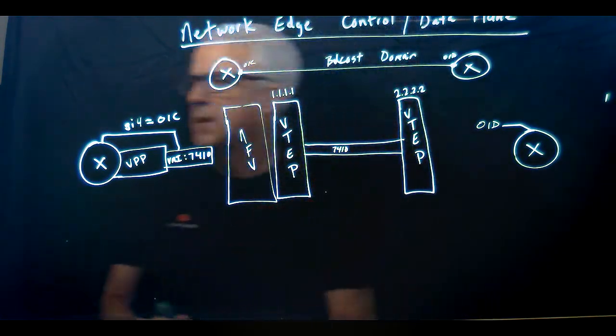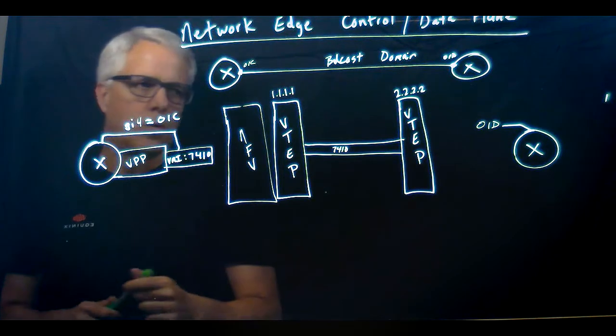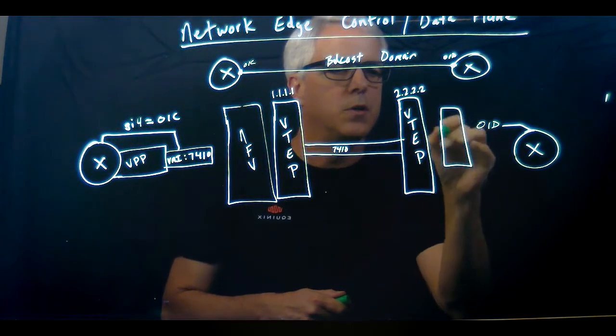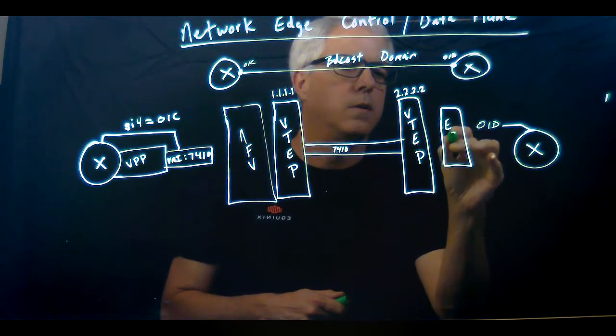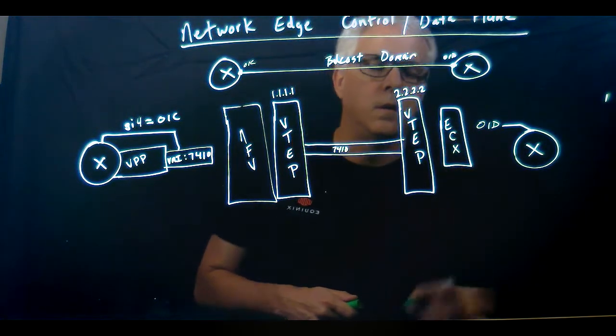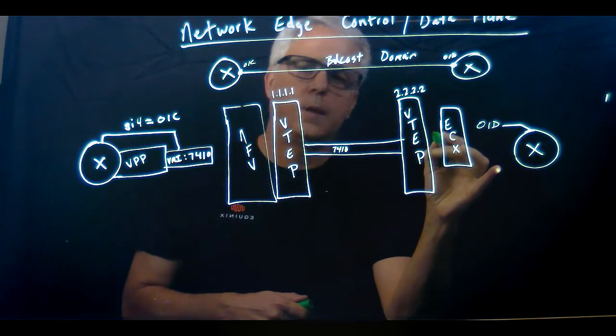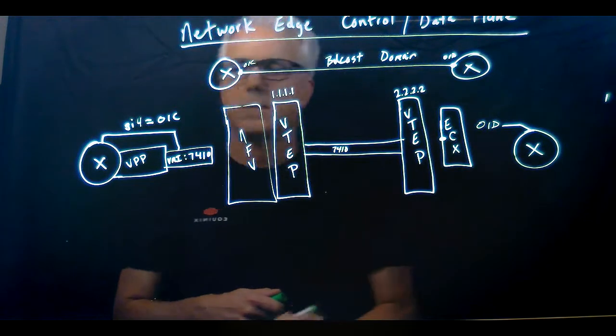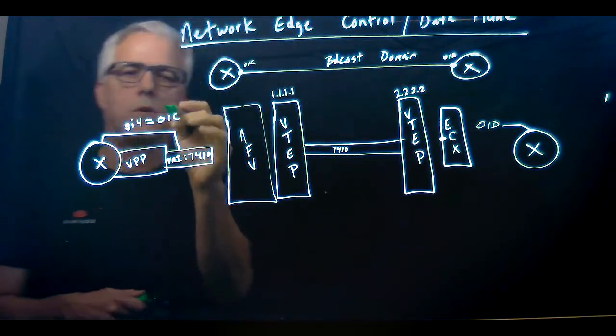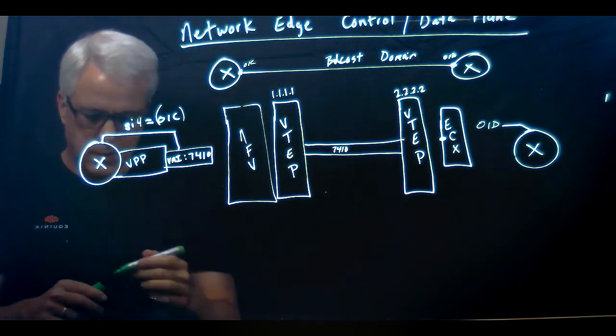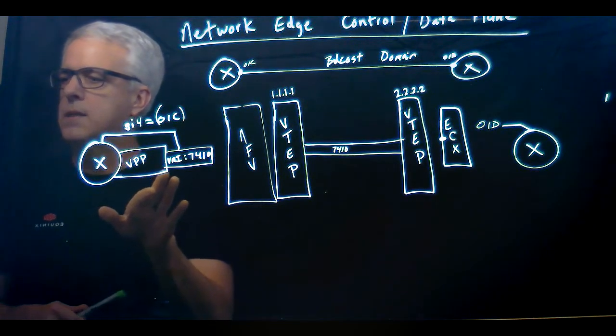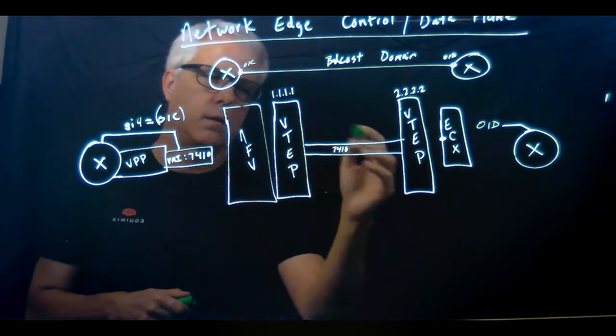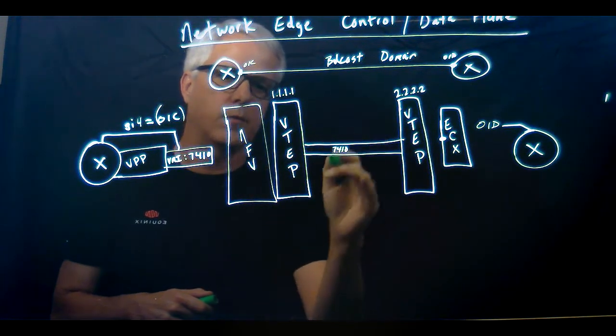What happens is at this point on the ECX switch, the NFV infrastructure is connected to the ECX switch. What happens is this 01C MAC address gets plumbed and gets stitched across this VXLAN, or I'm sorry, this EVPN infrastructure.